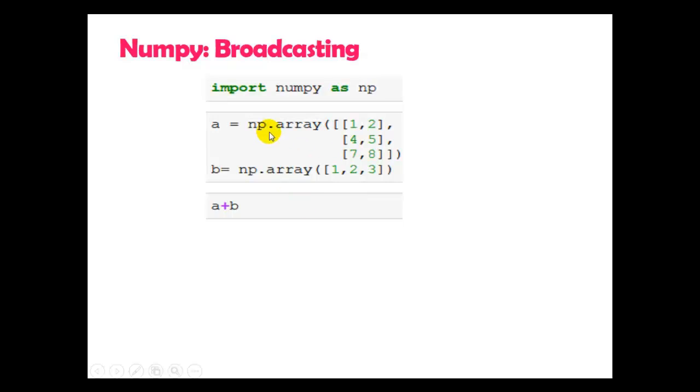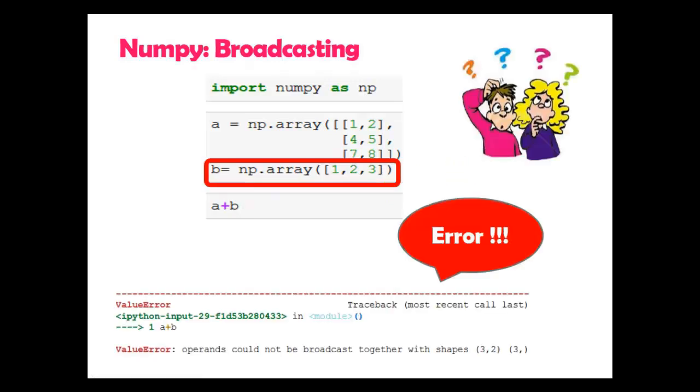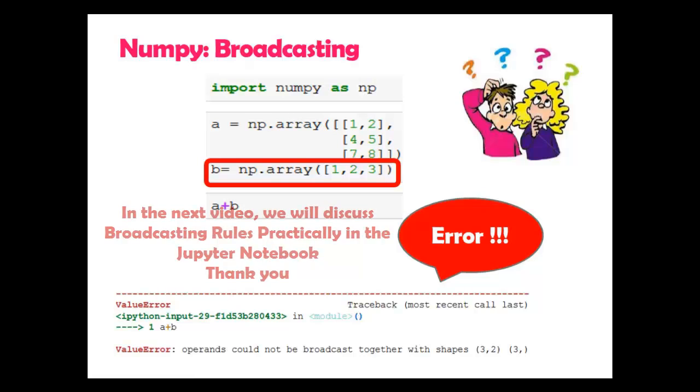Now here you can see again I have used 2D array and 1D array but here three elements A plus B. Now think what will happen? Why error? To know this let me jump to the Jupyter notebook then I will explain you broadcasting rules practically.